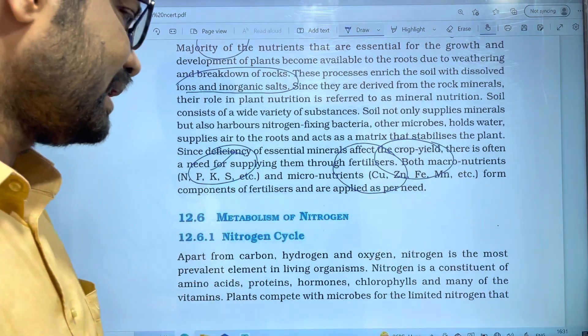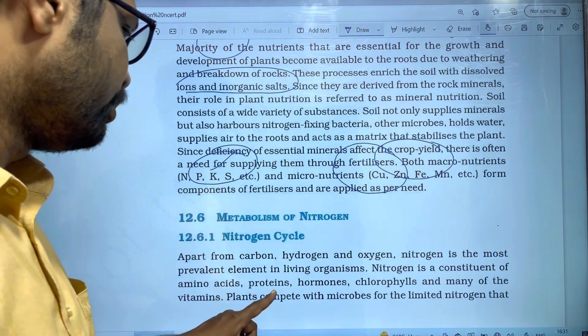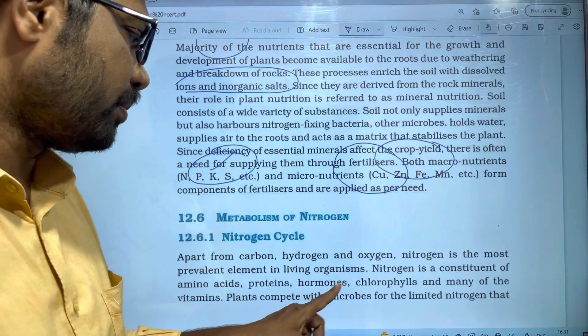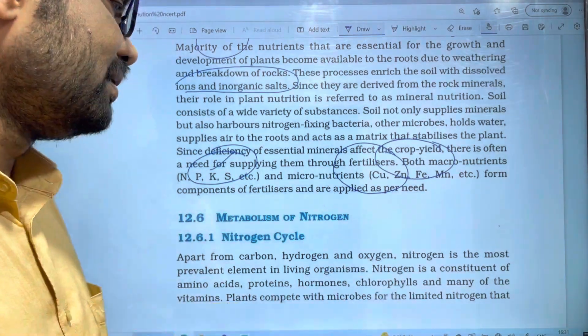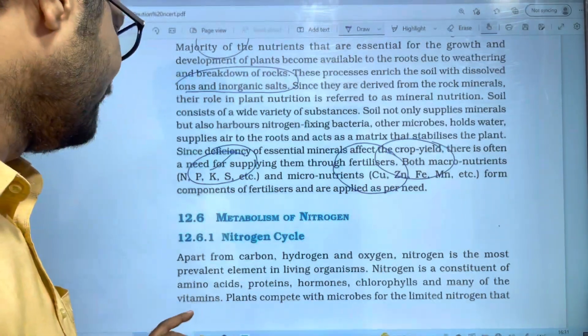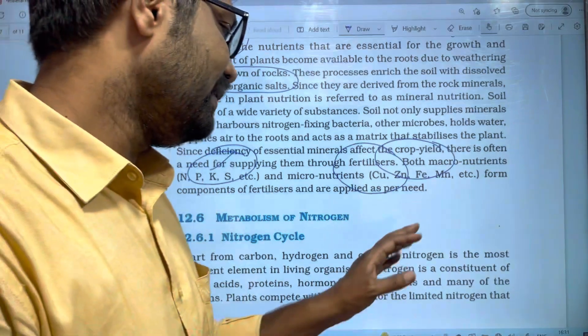Nitrogen is the most relevant element found in amino acids, proteins, hormones, chlorophylls, and many of the vitamins.